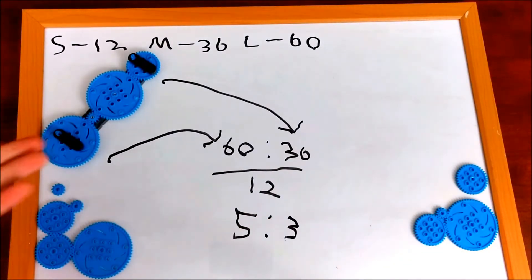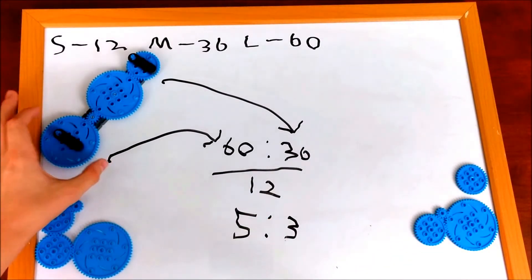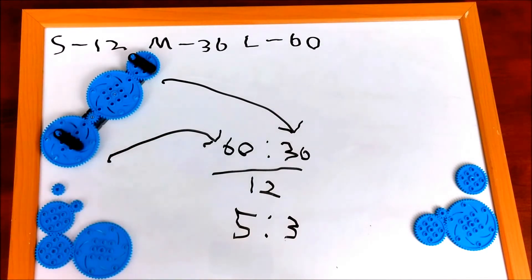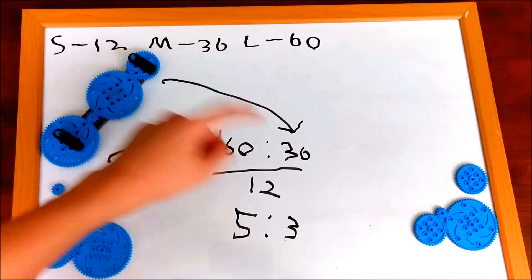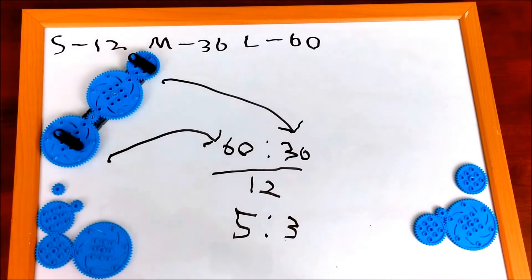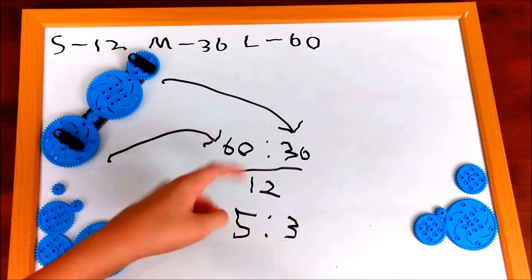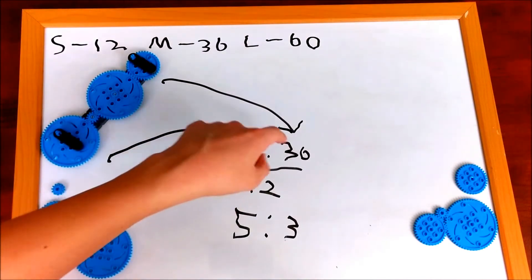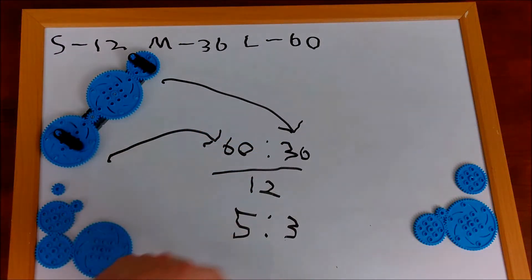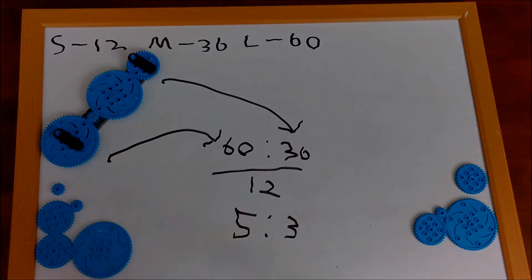So, for this one, you would take the first gear, so 60, count the teeth, and the last gear, 36, count the teeth, and then find what they're both divisible by. So, 60 divided by 12, 5. 36 divided by 12, 3. And that's your ratio.